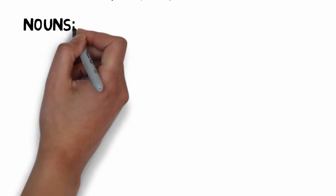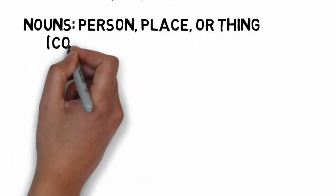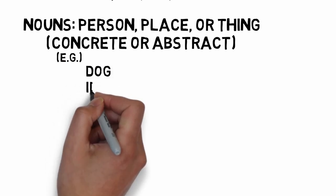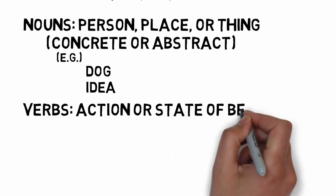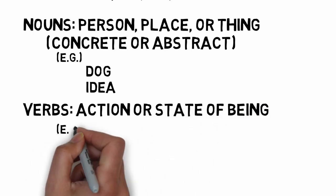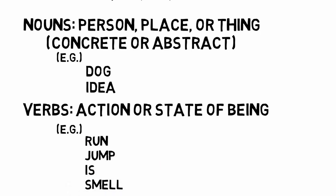A noun is something that describes a person, place, or thing. It can be concrete, referring to a physically touchable or imaginable thing like 'dog,' or it can be abstract, like 'idea.' Verbs include action words like 'run' and 'jump,' but also words like 'is' or 'smell.'